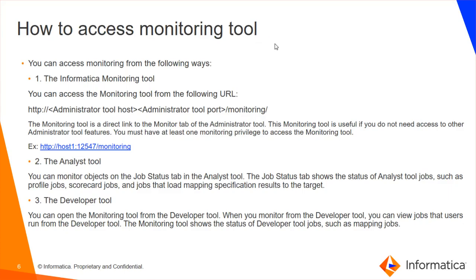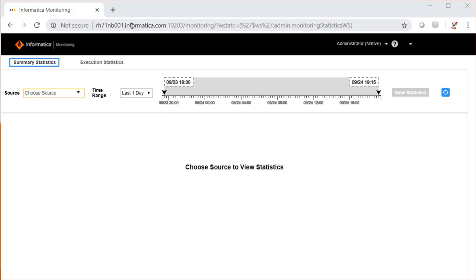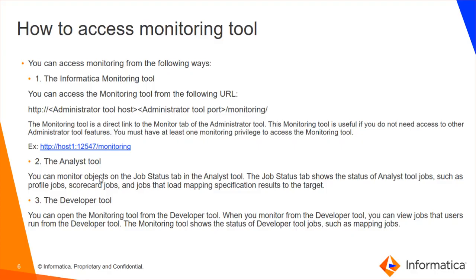Let's talk about how to access the monitoring tool. After configuring the model repository service as your monitoring MRS and providing the other configuration, you have to restart the data integration service so that it picks up the newly configured model repository service. We can access the Informatica monitoring tool from the admin console by providing HTTP or HTTPS with the configured admin console host, port number, slash monitoring. Here I have provided the admin console host port number slash monitoring, and it has taken me to the monitoring tool. We can also monitor objects on the job status tab in the analyst tool, which shows the status of analyst tool jobs such as profile jobs, scorecard jobs, and mapping specification results.